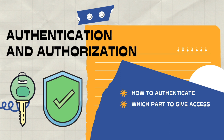Authorization is also very important. Authorization means controlling which user can access which data. For example, a student should not be able to access a teacher's data — that is authorization. In Django you can use Groups for this. Additionally, you can integrate third-party authentication like email authentication, Google authentication, Facebook authentication, and Auth0 into your Django application.